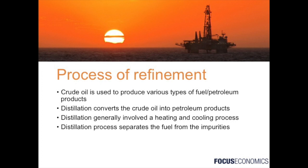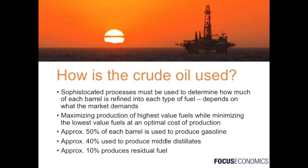Now that we've gone through the metrics that measure crude oil quality, we can talk about how crude oil is processed and used. Crude oil is used to produce various types of fuel, the most well-known being gasoline. After crude oil is extracted, it is transported to refineries where it is converted into finished petroleum products such as gasoline and diesel. Without getting too technical, refinement generally involves a distillation process to purify the oil — heating and cooling it to separate the useful fuel from the not so useful. More sophisticated processes and equipment must then be used to determine how much of each barrel should be refined into the different fuel types the market demands.